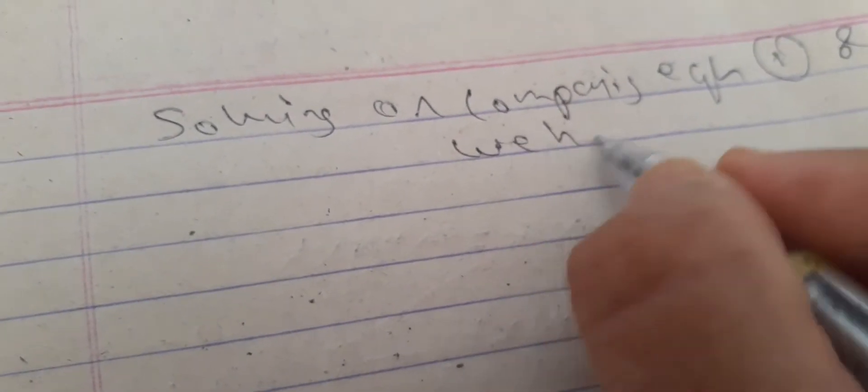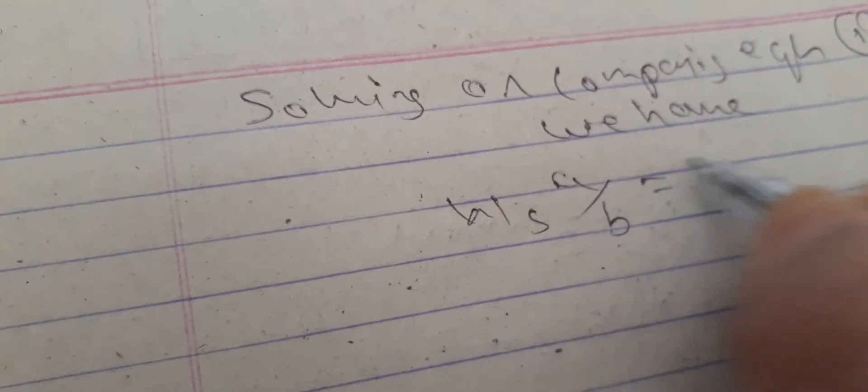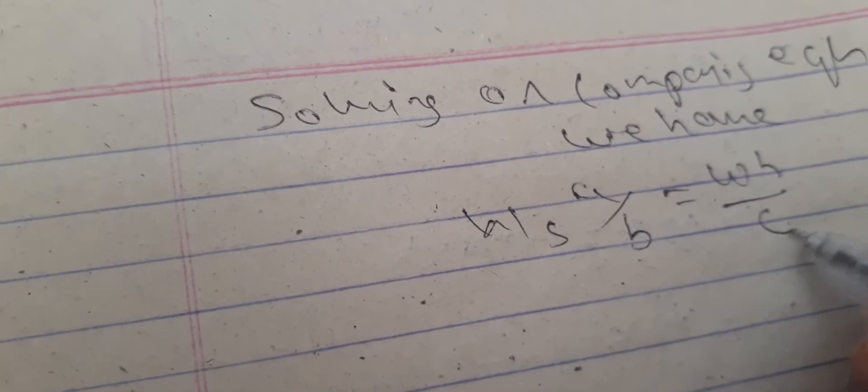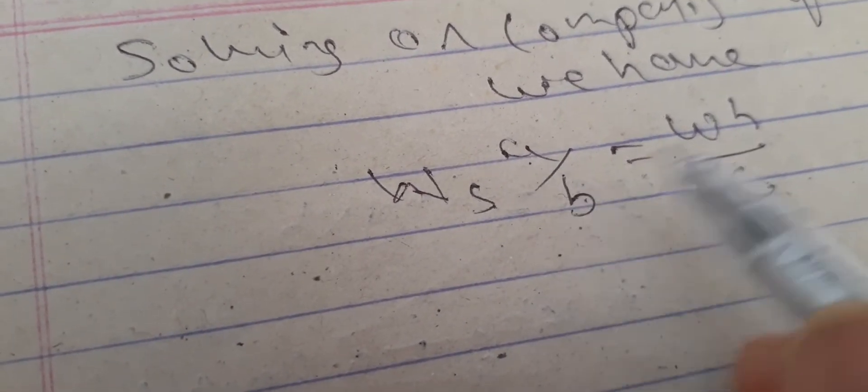So by solving or comparing equation 1 and 3, we have W suffix s into a by b equals W h by c. We all understand W suffix s into a by b equals W h divided by c. Unknown weight W equals a by b into c by h into W s.